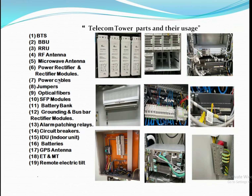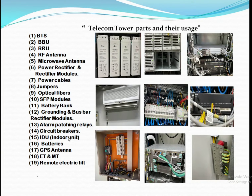The Radio Remote Unit (RRU) sits in the network between the RF antenna and the baseband unit, supporting connectivity via the BBU and RF antenna. The function of the RF antenna is to radiate signals so that users can operate on mobile frequencies like 900 MHz and 1800 MHz.